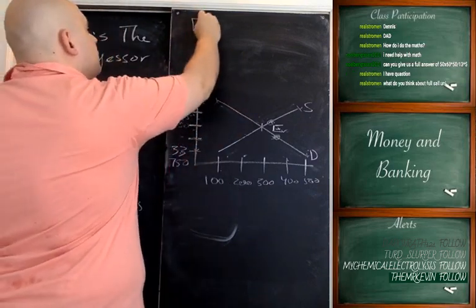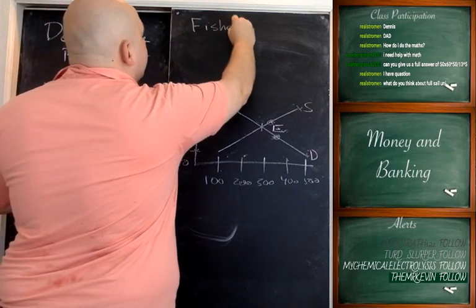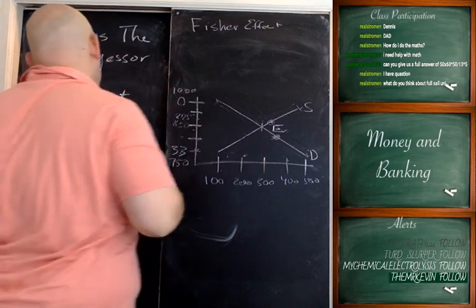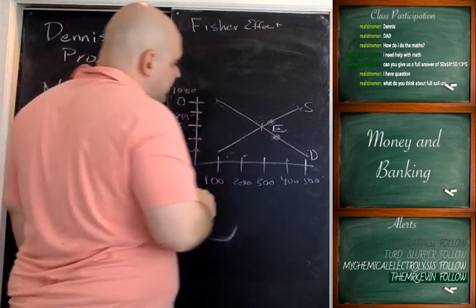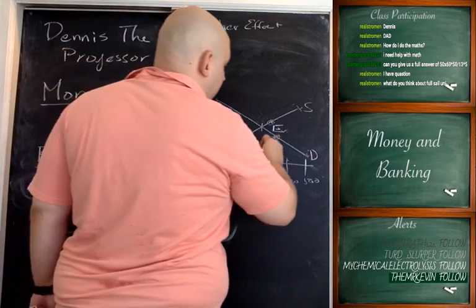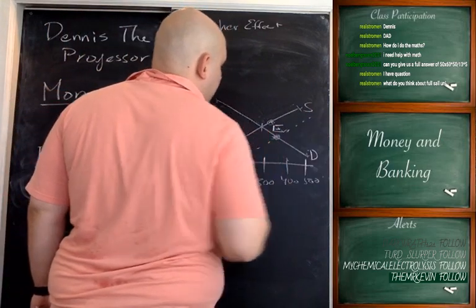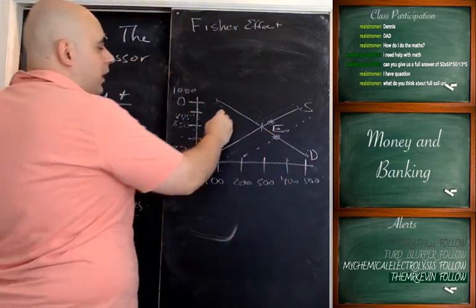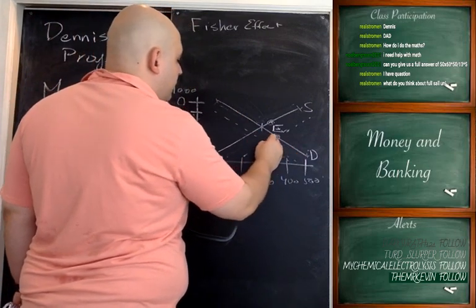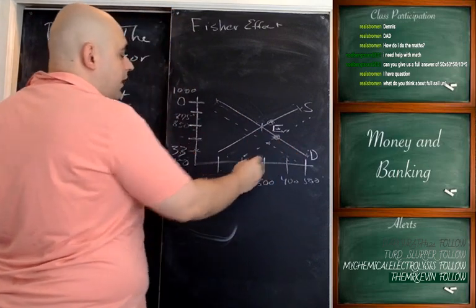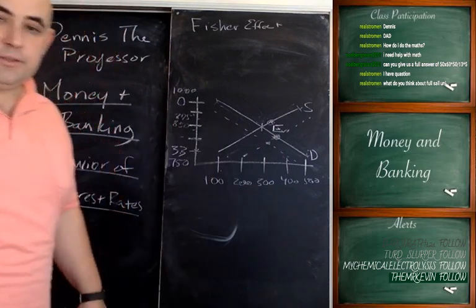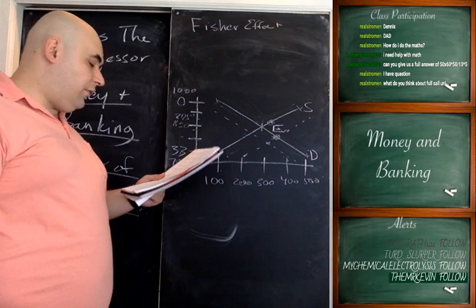The Fisher Effect is something we've already covered. Essentially, when expected inflation rates rise, the supply of bonds rises and the demand for bonds declines, so you're left with the same quantity of bonds on the market but at a higher interest rate. This is called the Fisher Effect.